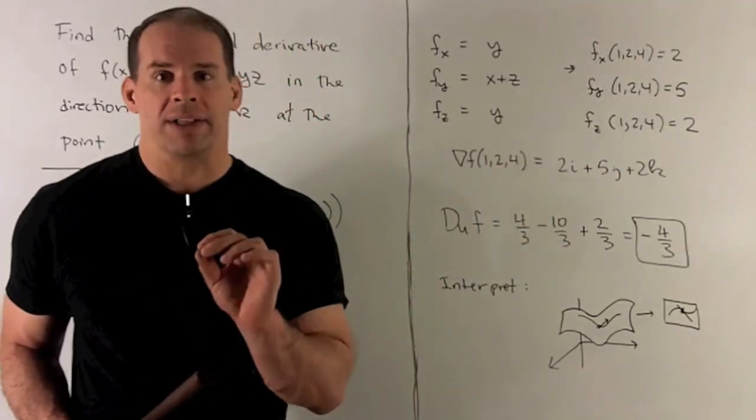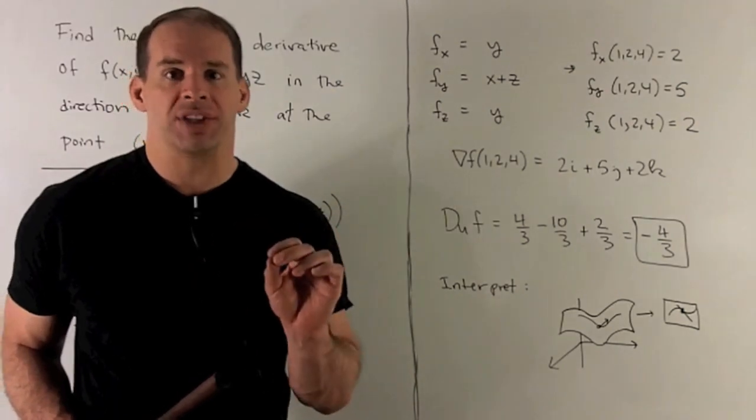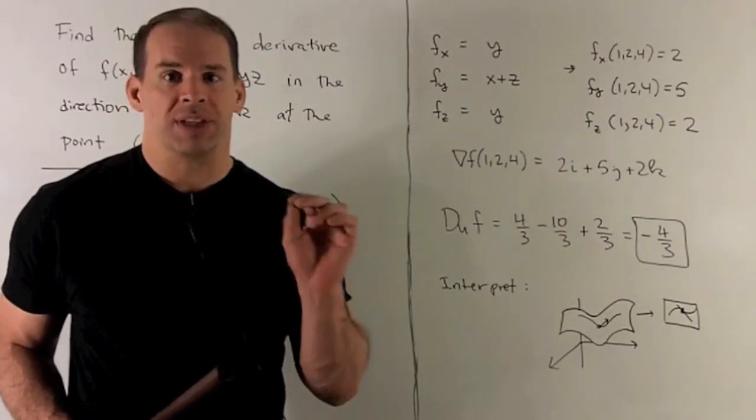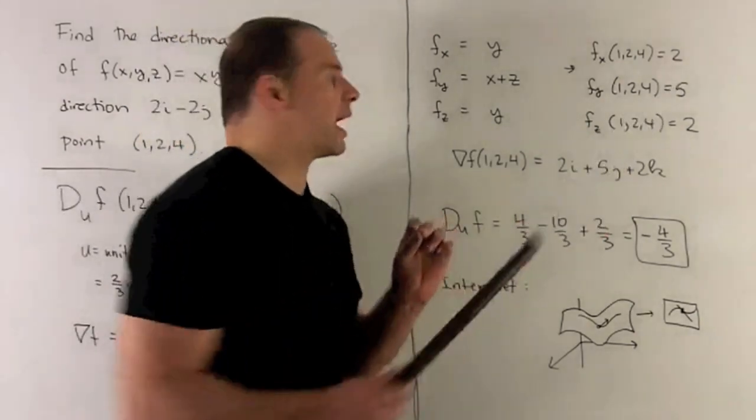Partial with respect to y, so y is the variable, x and z are constants. We get x plus z, we put our point in, a 5 comes out.